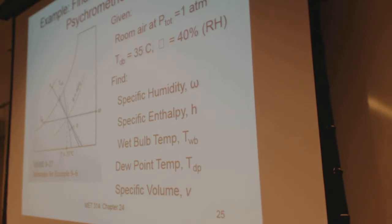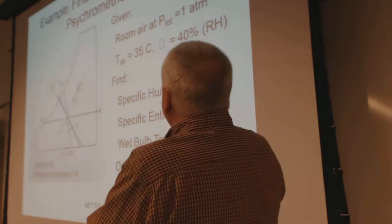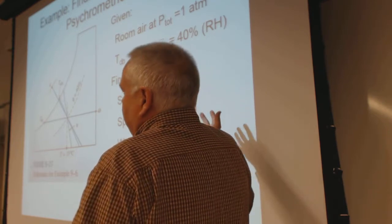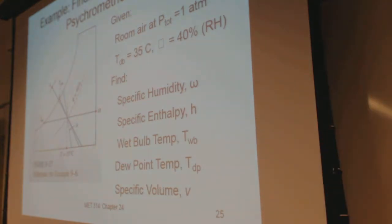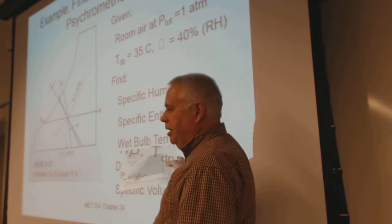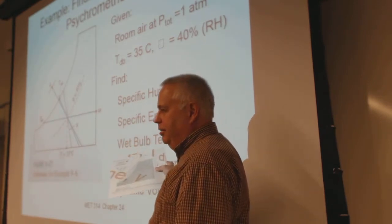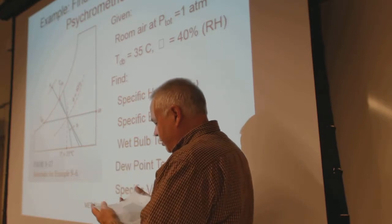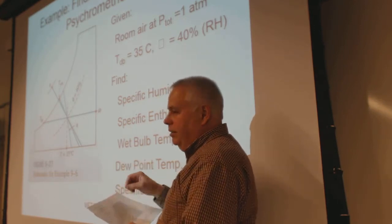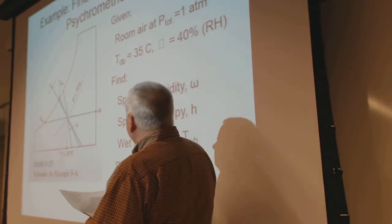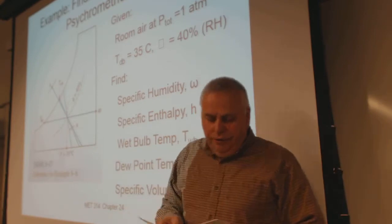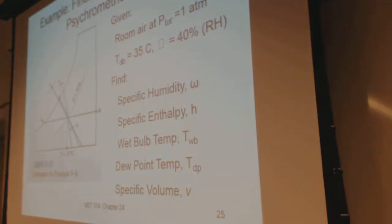What we're looking at here: we've got room air at one atmosphere. Your chart is based on a barometric pressure of 101.325 kilopascals — we're not actually at that pressure here due to altitude and weather, but the chart uses that for total pressure. The state point we're finding is 35 degrees C, 40% relative humidity.